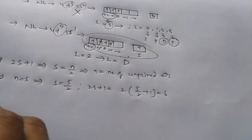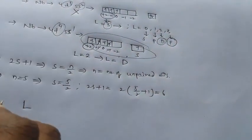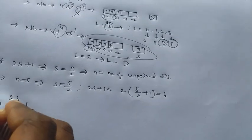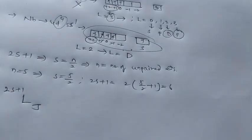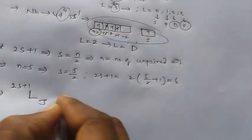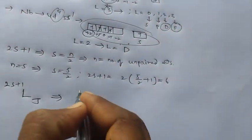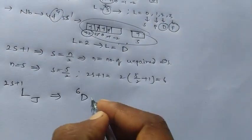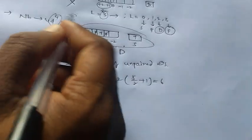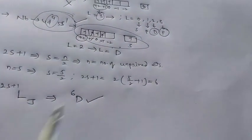From this we know that the representation of term symbol is 2S plus 1, and this is L equal to J. From this we have D6 term symbol. For this electronic configuration, this must be the correct electronic configuration for the D6.